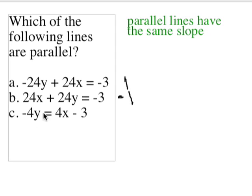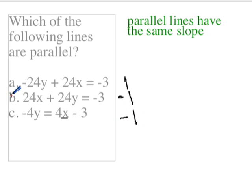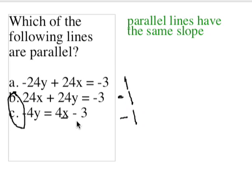And then finally, I have this one, and all I have to do to put it in y equals mx plus b form is divide both sides by negative 4. And here, 4x divided by negative 4 becomes negative 1. So it looks like b and c are our parallel lines.